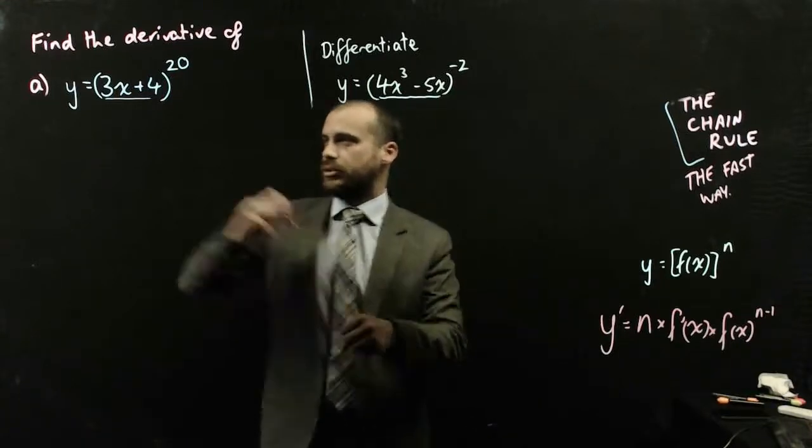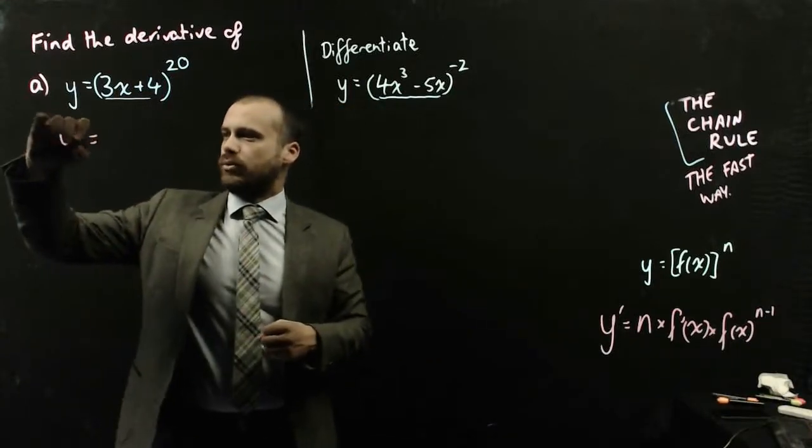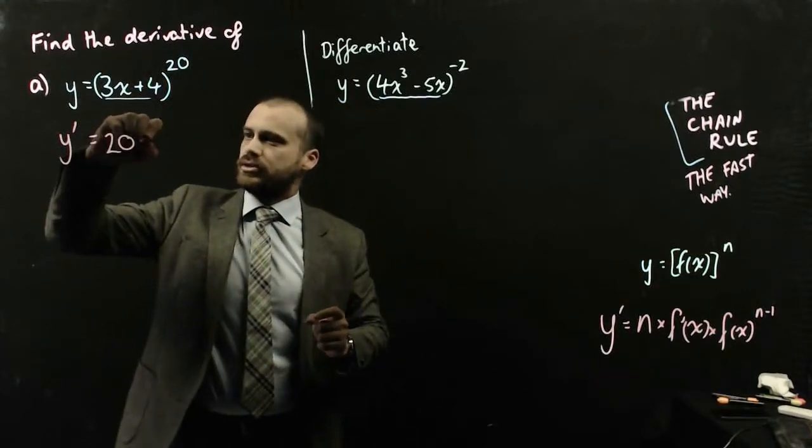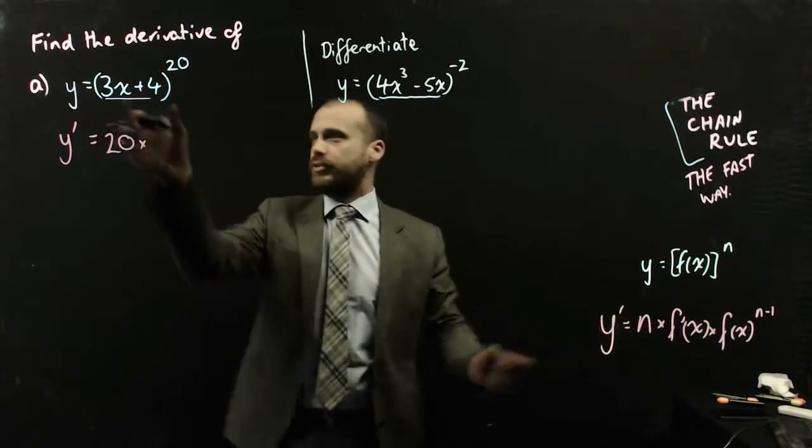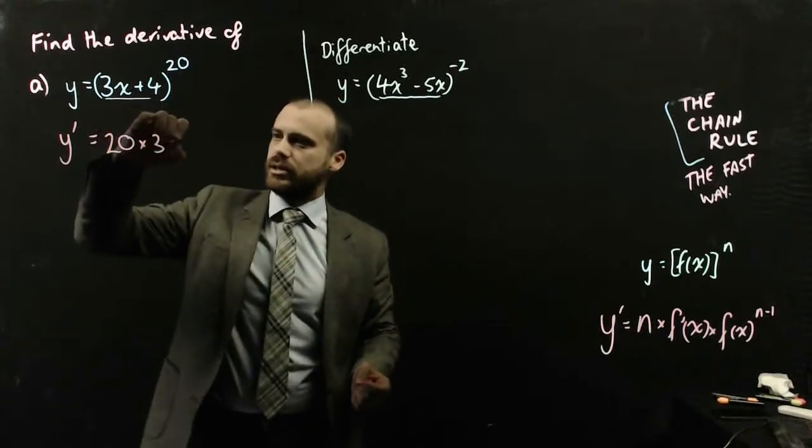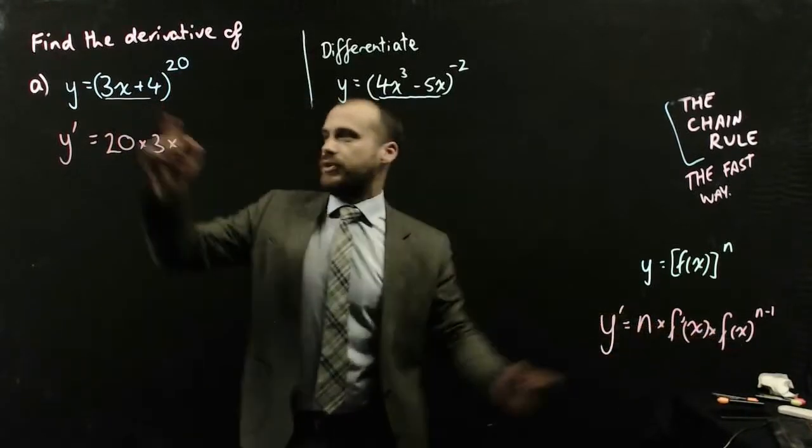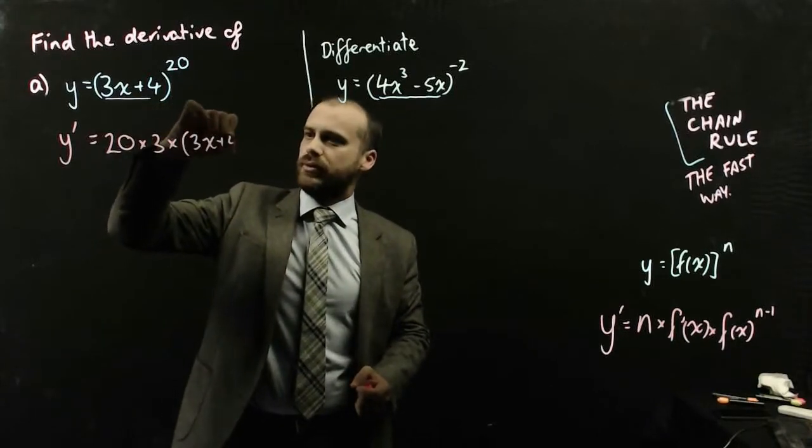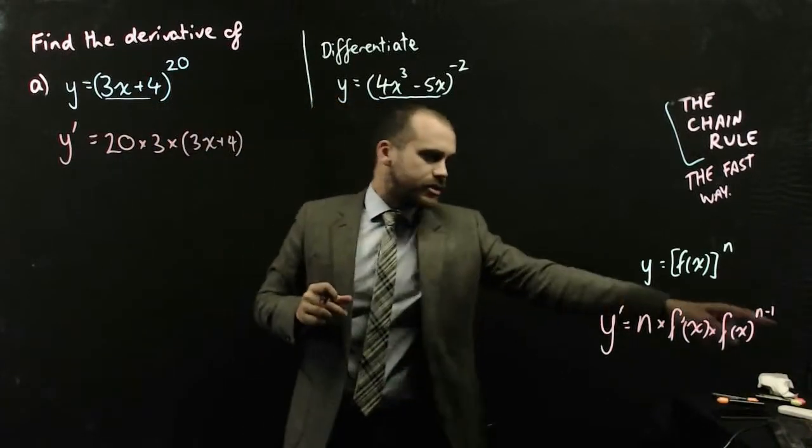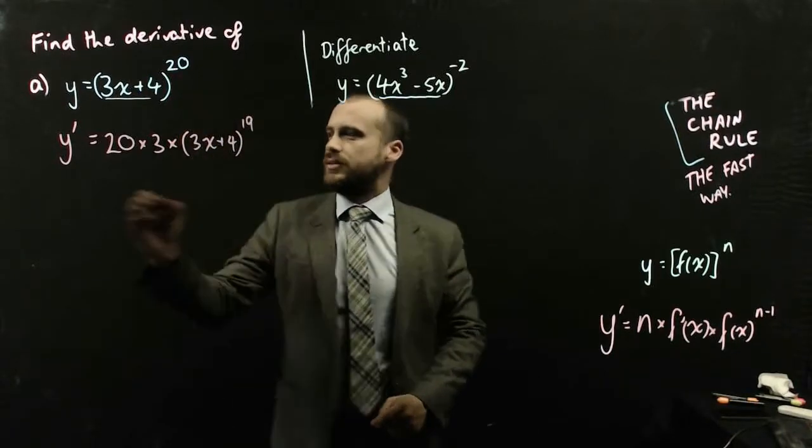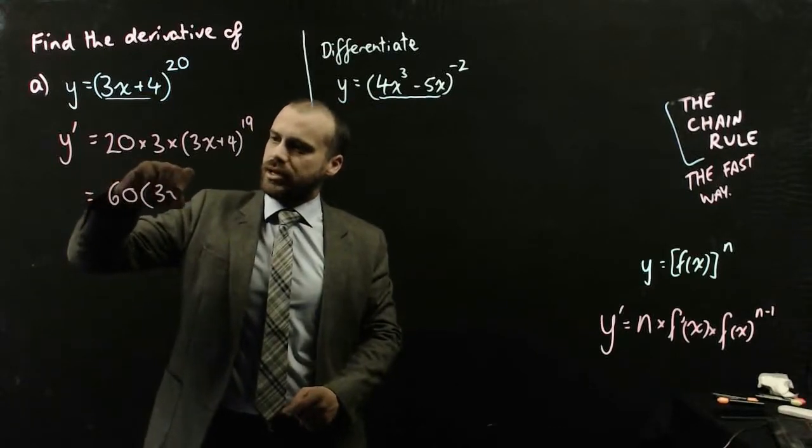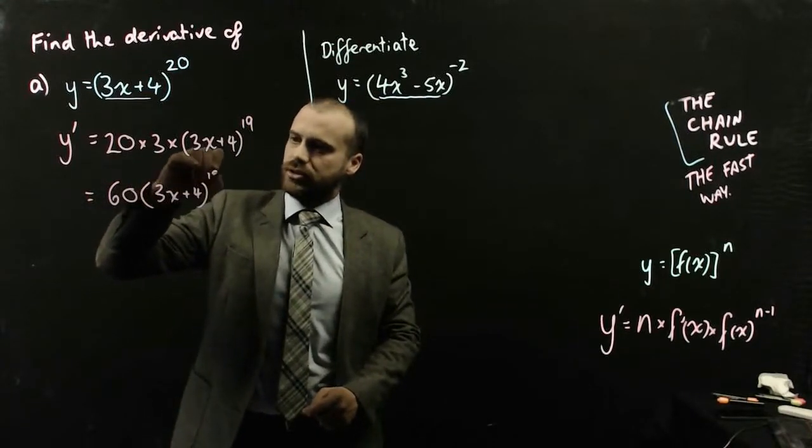So really quickly, how does that look? It looks like y dash is equal to n, bring the 20 out the front, times the derivative of the thing in there, times 3, times the function itself, in this case 3x plus 4, and the function itself, raised to the power of n minus 1, 19. Tidy that up a bit, 60, 3x plus 4 to the 19th.